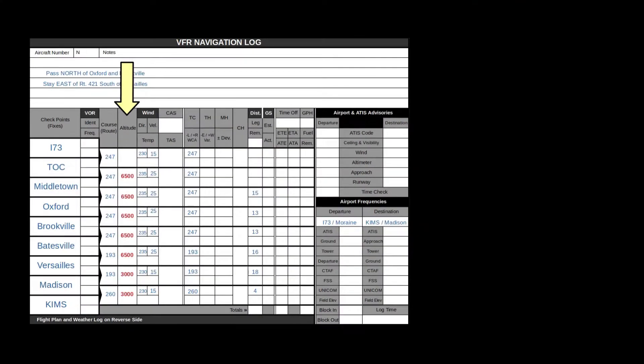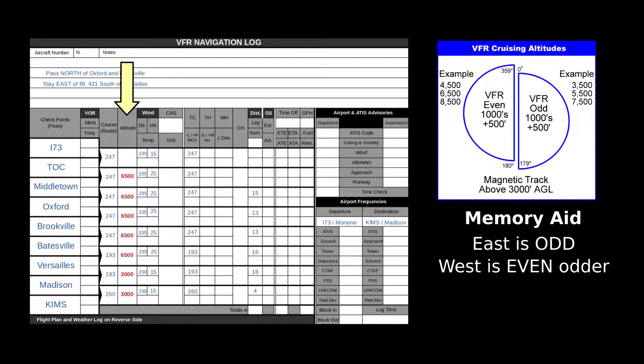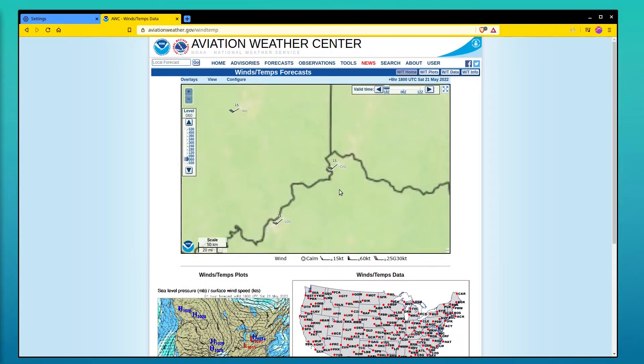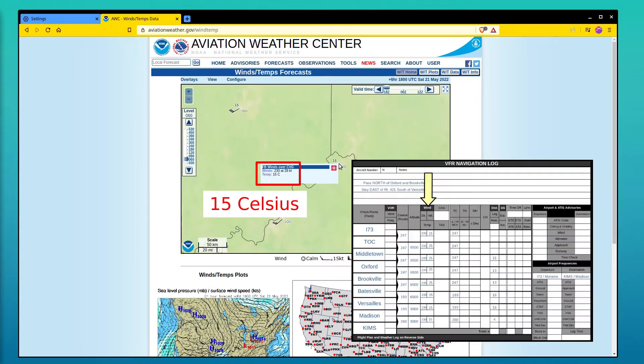6,500 will be our altitude to comply with hemispheric altitude rules. Temperature forecasts are not integrated into the graphical area forecast at the time I'm recording this video, so you'll have to get that from the winds and temps forecast.